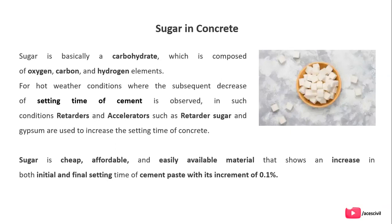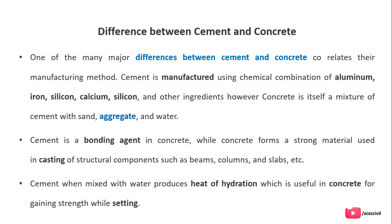One of the major differences between cement and concrete relates to their manufacturing method. Cement is manufactured using a chemical combination of aluminium, iron, silicon, calcium, and other ingredients. However, concrete is itself a mixture of cement, sand, aggregate, and water. Cement is a bonding agent in concrete, while concrete forms a stronger material used in casting structural components such as beams, columns, slabs, etc.